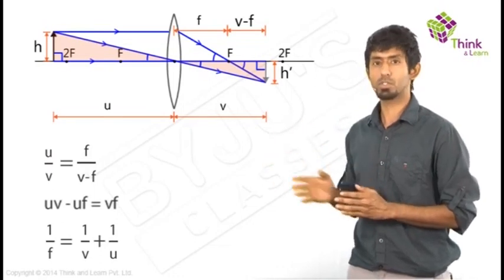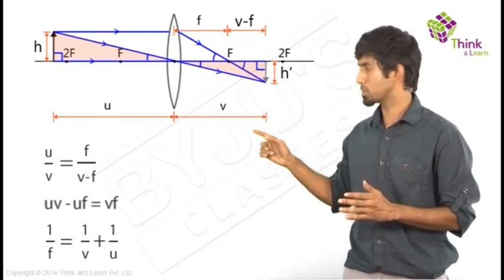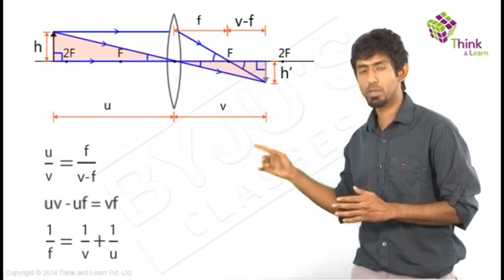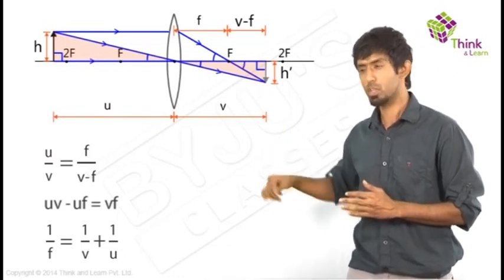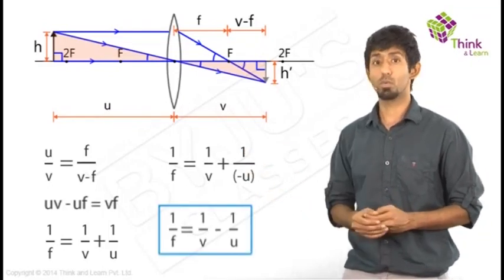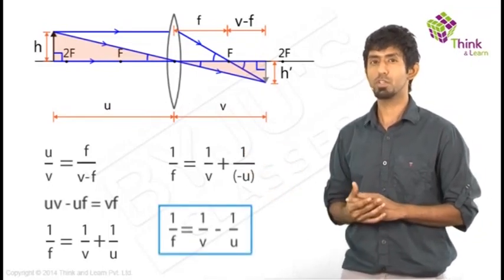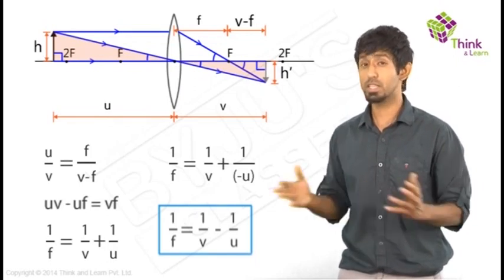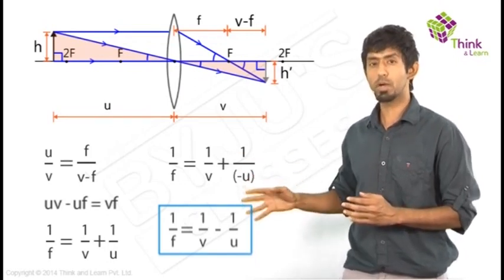So if you replace that over there, what happens to it? What was 1 by V plus 1 by U equals 1 by F? What does it become now? U becomes negative. So replace U with minus U, and what do you get? 1 by V minus 1 by U equals 1 by F. And that's the formula for lenses or the lens formula.